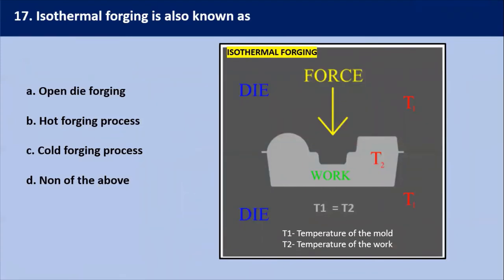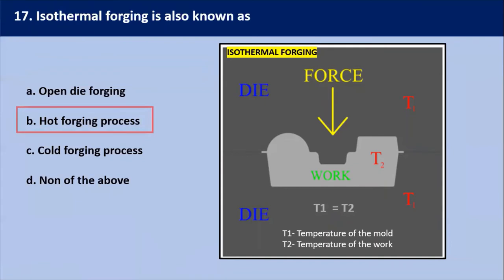Isothermal forging is also known as? The answer is hot forging process, in which the metal part is maintained at the same high temperature — meaning the forging dies are also maintained at the same temperature. The temperature of the mold as well as the temperature of the work piece will be the same in isothermal forging. This type of forging is more expensive than conventional forging and is mainly used for materials like titanium or super alloys. So isothermal forging is also known as a hot forging process.